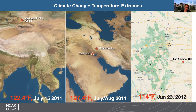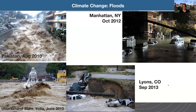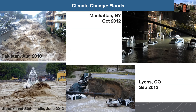Along with climate change come changes in temperature extremes. On July 15, 2021, Eidinko Lake in China hit 122.4 degrees Fahrenheit. In July and August 2021, locations in Iraq hit 127.4 degrees Fahrenheit. And Las Animas, Colorado experienced a high of 114 degrees Fahrenheit on June 23, 2012. We're also seeing an increase in floods — pictures from Pakistan in August 2010, India in June 2013, Manhattan in October 2012, and Lyons, Colorado in September 2013.